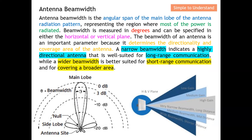The beam width is measured in degrees, and can be specified in either the horizontal or vertical plane for an antenna. You have two types of polarization — horizontal and vertical — and therefore you can describe beam width in either plane. The beam width of an antenna is an important parameter because it determines the directivity and also the coverage of the antenna.